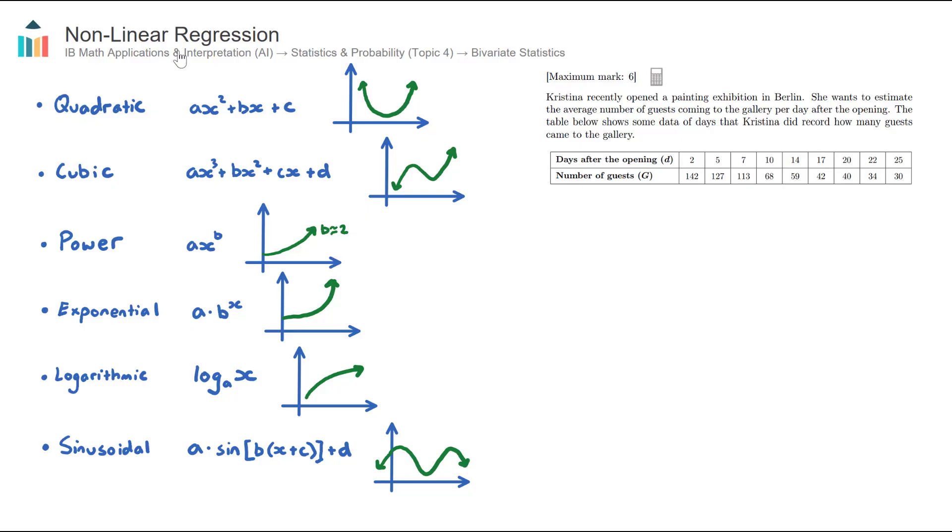In this video, we look at nonlinear regression, which is part of the AI HL-only course in Topic 4, Statistics and Probability, under the large subtopic of bivariate statistics.